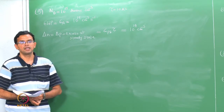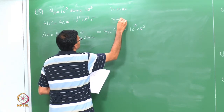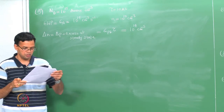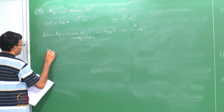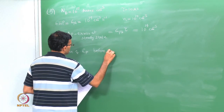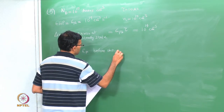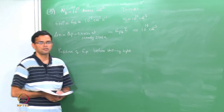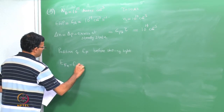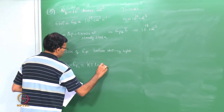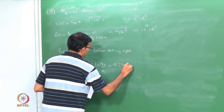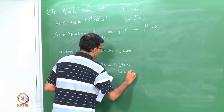N_d = 10¹⁵ and for silicon N_i = 10¹⁰. Before shining light we calculate the Fermi level position: E_Fn − E_Fi = kT·ln(N_d / N_i), which works out to 0.298 electron volts above E_Fi.